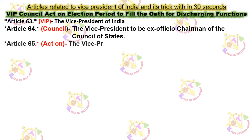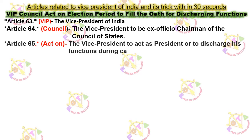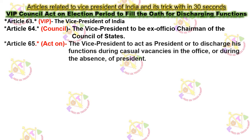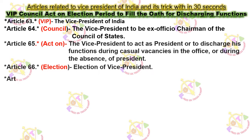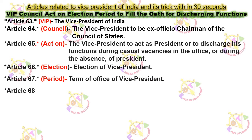Here VIP stands for the Vice President of India, mentioned in Article 63. Council stands for the Vice President to be Ex-Officio Chairman of the Council of States, mentioned in Article 64. Act on stands for the Vice President to act as President or to discharge his functions during casual vacancies in the office or during the absence of President, mentioned in Article 65.